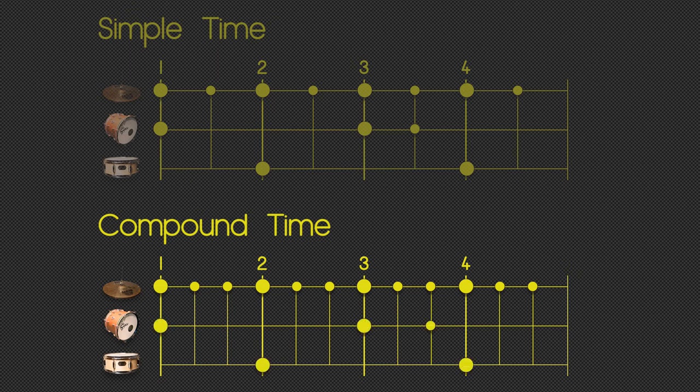If we put a kick drum and a snare drum again on one of those inner beats, we end up with something like this. So this is compound time because everything is divided by 3.